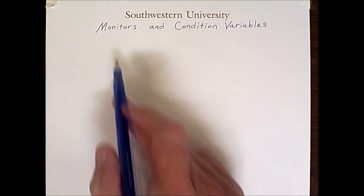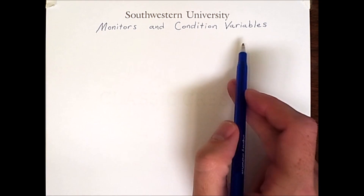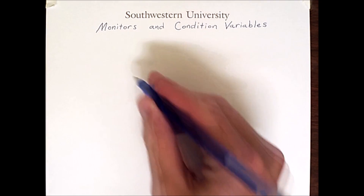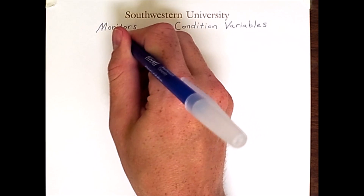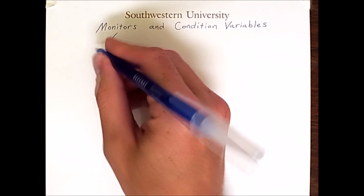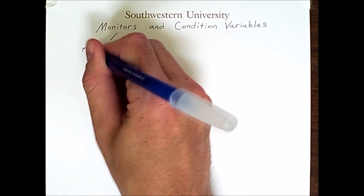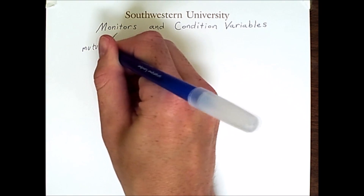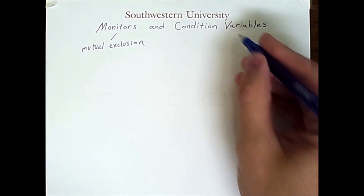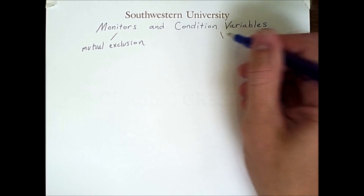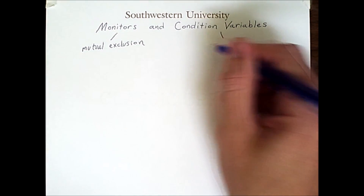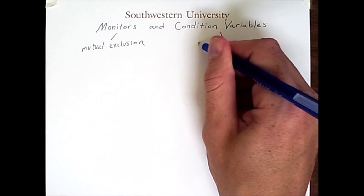This video is about monitors and condition variables. Monitors provide mutual exclusion, and condition variables provide synchronization.